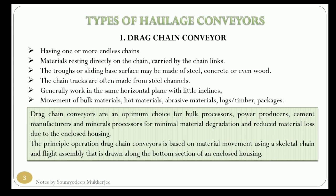Generally this type of conveyor works in the horizontal plane; vertical plane types are not normally used, though it can also be used with some inclination angle. It is used to move bulk materials, hot materials, abrasive materials, lumber, packages, and similar things. Sometimes cars can be moved in automobile assembly lines by putting two holes on one chain.